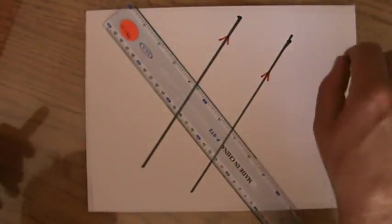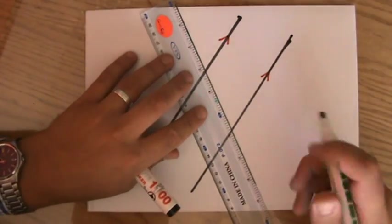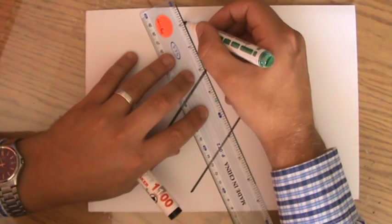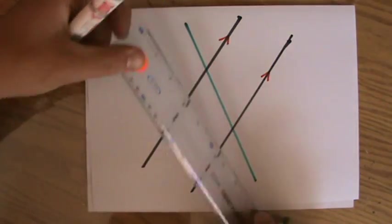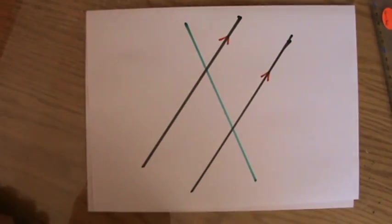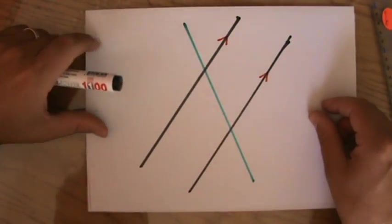Now with parallel lines, I'm going to do that in green, we need one line intersecting the pair of parallel lines. So this line for instance. And now we can look at what we call alternate angles and corresponding angles.